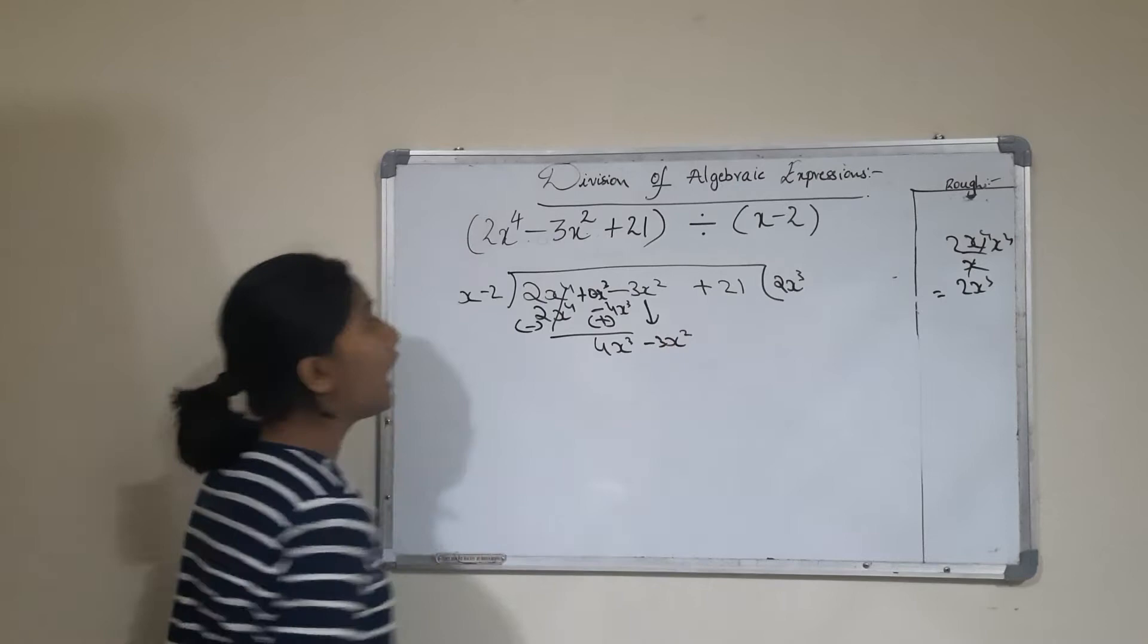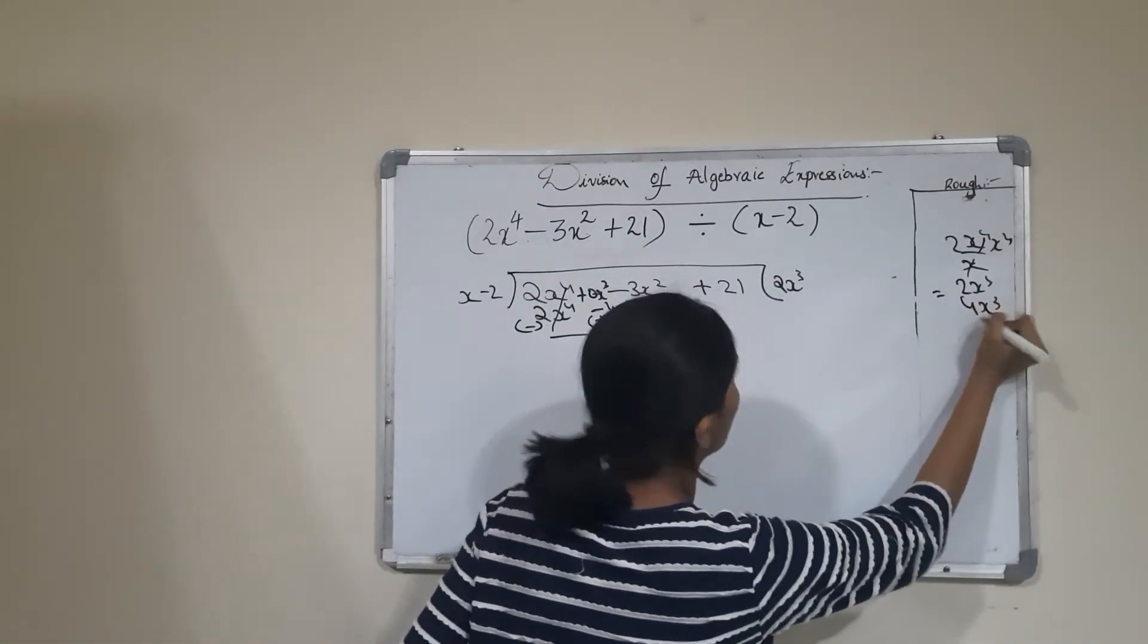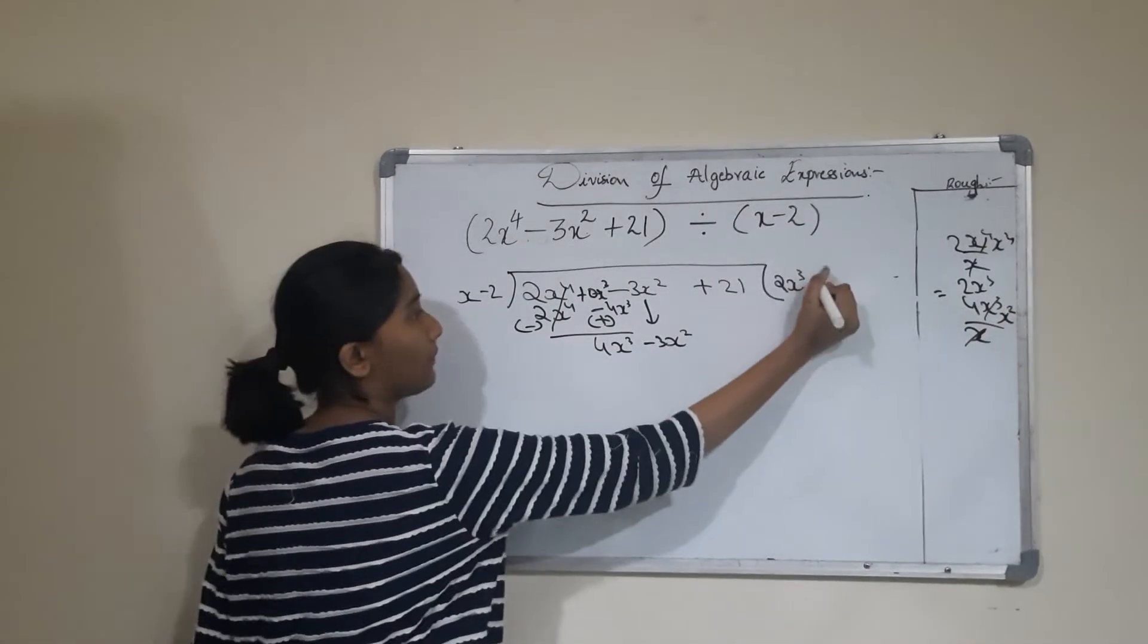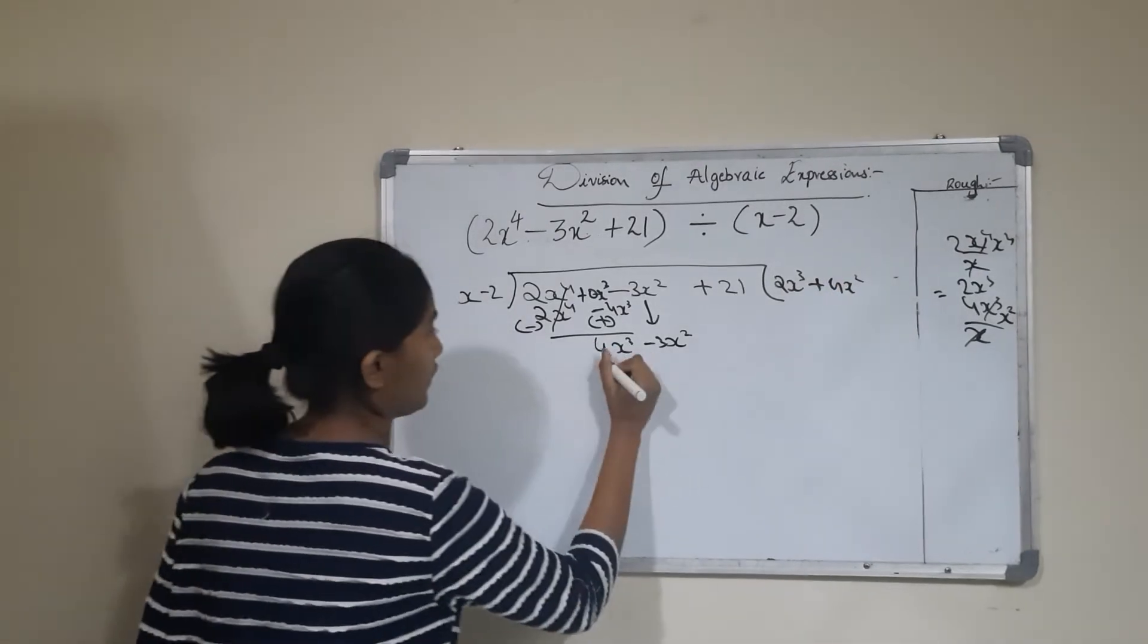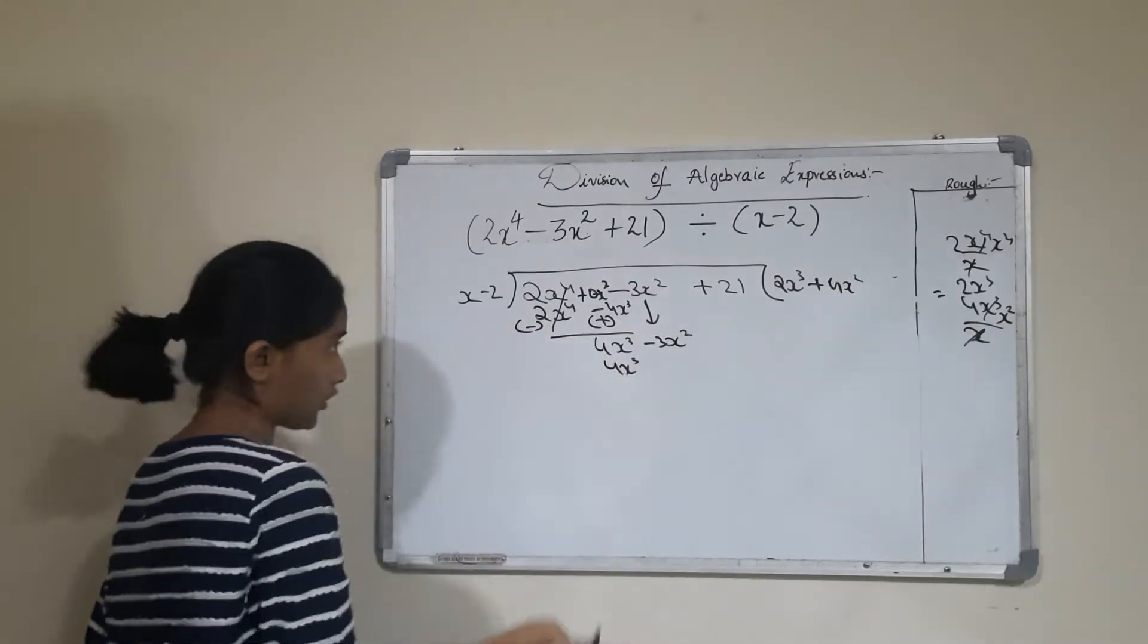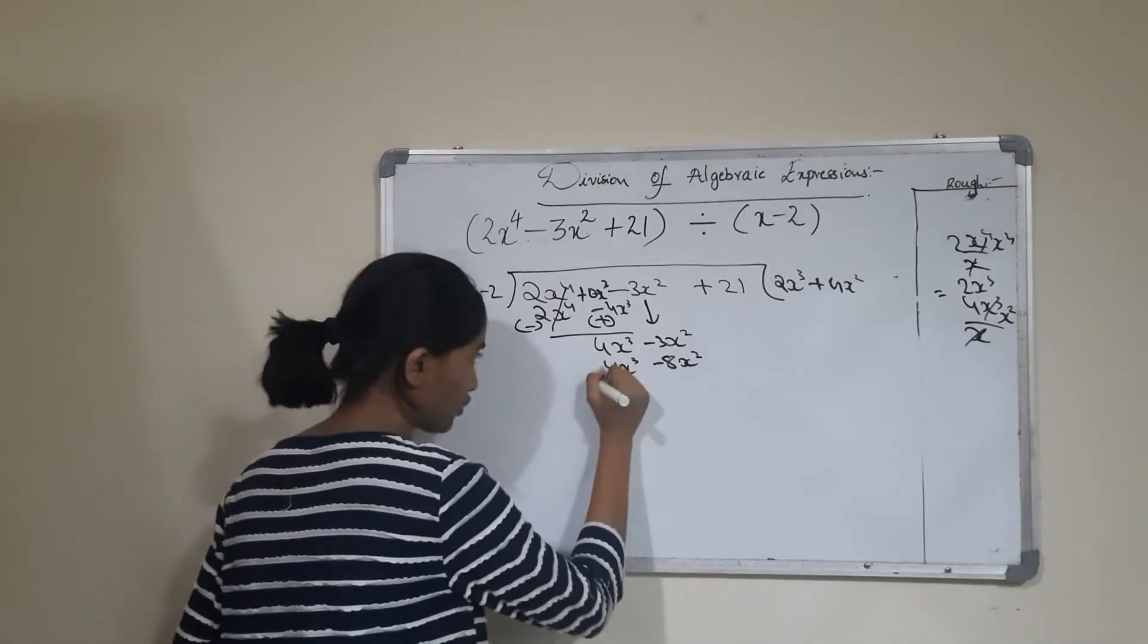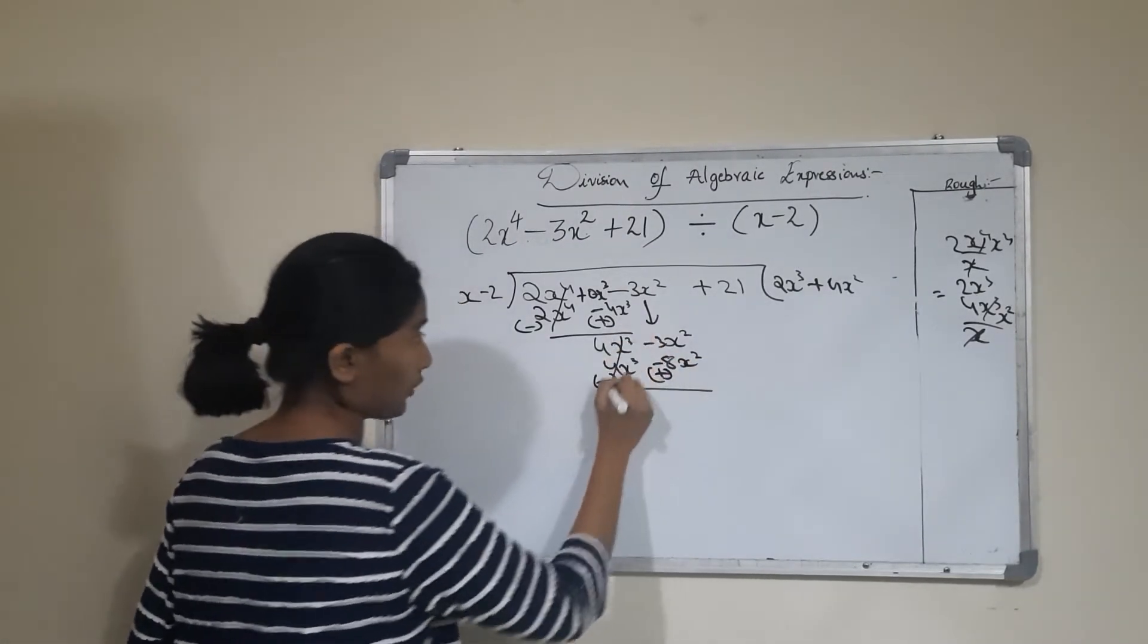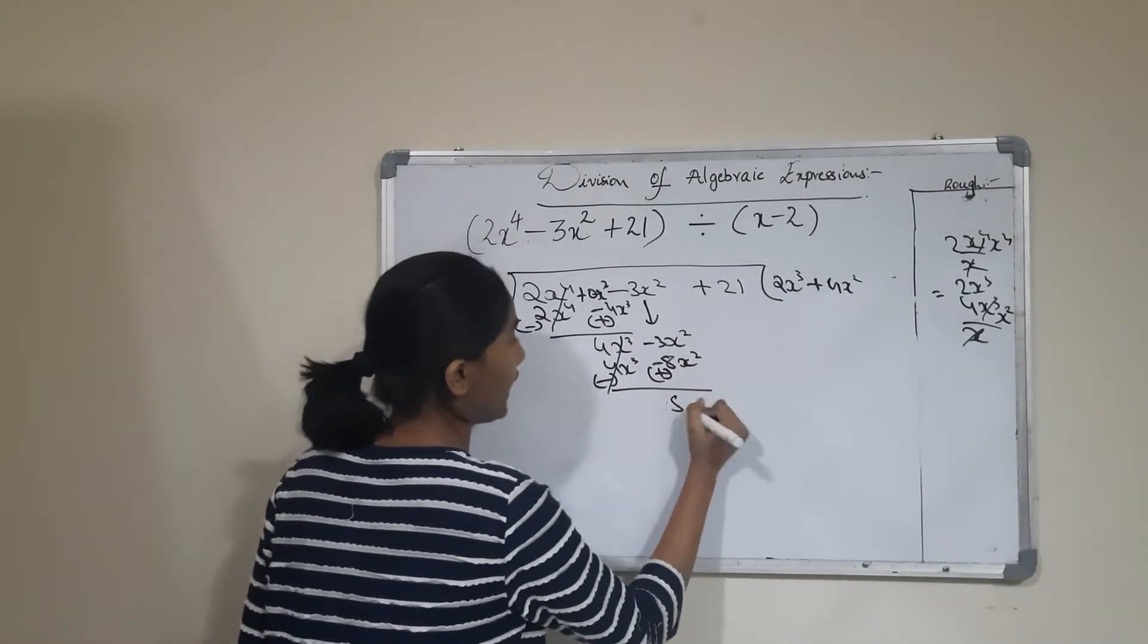Divide 4x^3 by x to get 4x^2. I'll write +4x^2 here. Now multiply 4x^2 by -2 to get -8x^2. Change the signs for subtraction. Cross out the terms, and we get 5x^2.